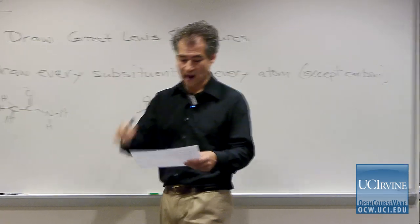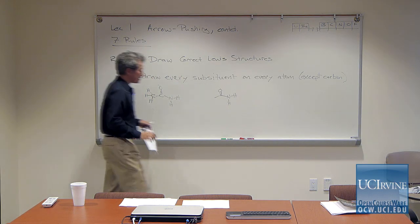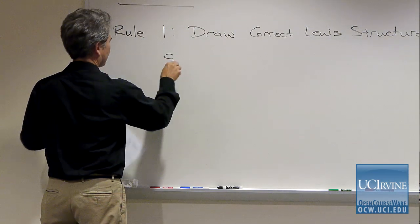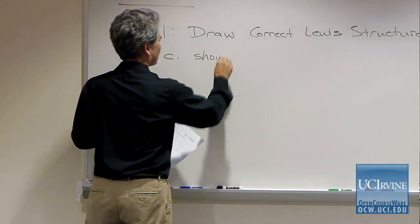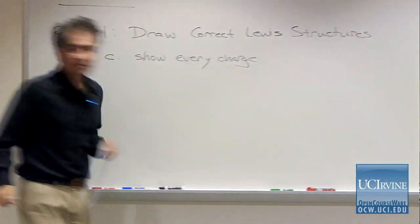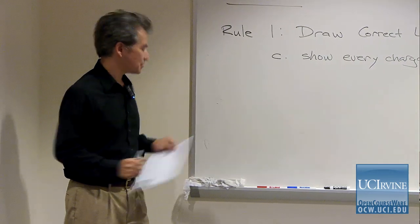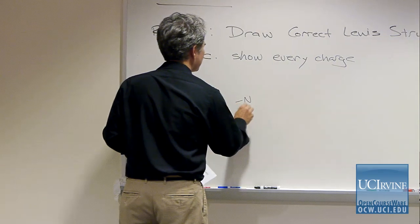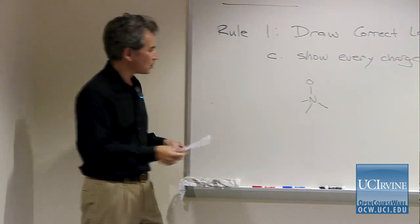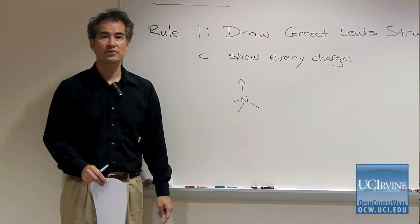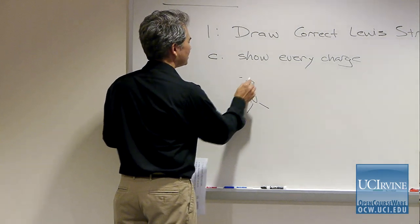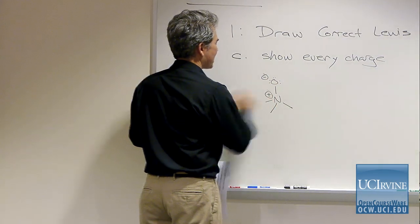Practice until you are instantaneous at knowing where the hydrogen atoms are. The third part of rule one is to draw every charge. Take trimethylamine N-oxide — there need to be charges on this structure. If you don't draw those charges necessary for a correct Lewis structure, you'll miss some of the potential reactivity of this molecule. Once you draw the charges on trimethylamine N-oxide, you recognize that the oxygen is probably the nucleophilic part.